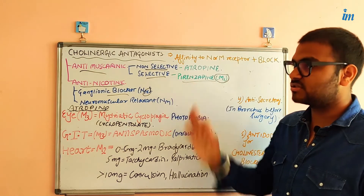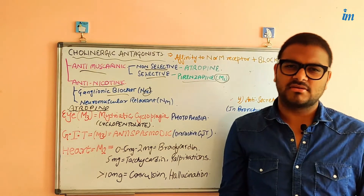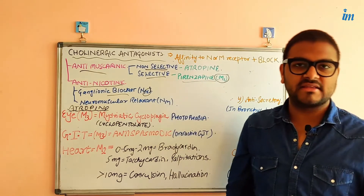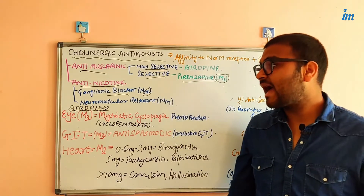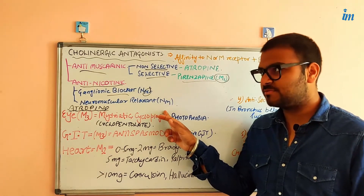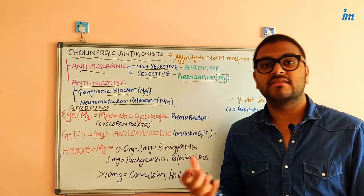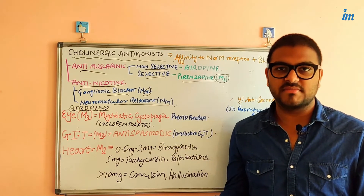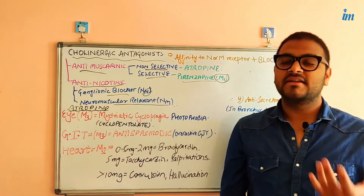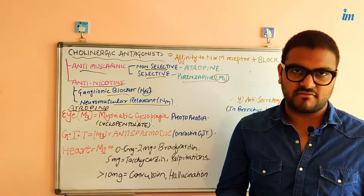The other class is anti-nicotinic agents — they bind to nicotinic receptors. Nicotinic receptors present in ganglia are targeted by ganglionic blockers. If the agent binds to nicotinic receptors on skeletal muscle (NM type), it causes relaxation of the muscle. Such agents are called neuromuscular relaxants.